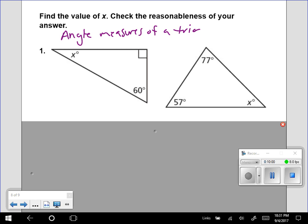Hopefully you remember, those add up to 180. So inside here, this should add up to 180. I know this little box means 90.